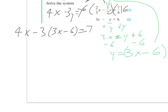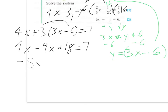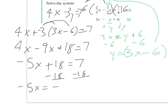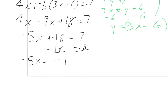Now replacing y with 3x minus 6 in the equation 4x minus 3y equals 7. Be careful distributing the negative 3 — think of it as adding negative 3 to make sure to distribute the negative. We end up with 4x minus 9x plus 18 equals 7. Combining the x's gives negative 5x plus 18 equals 7. Subtracting 18 gives negative 5x equals negative 11, and dividing by negative 5 gives x equals 11/5.